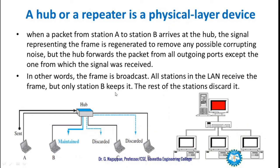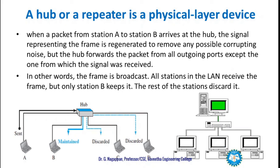A hub or repeater is a physical layer device. When a packet from station A to station B arrives at the hub, the signal representing the frame is regenerated to remove any possible corruptions. The hub then forwards the packet from all outgoing ports except the one from which the signal was received. In other words, if the frame is broadcast, all stations in the LAN receive the frame, but only station B keeps it and the rest discard it. This is how the hub or repeater works.